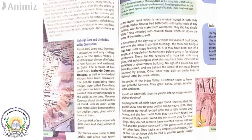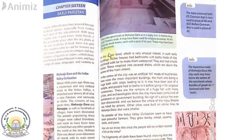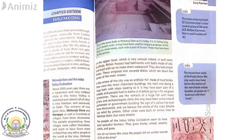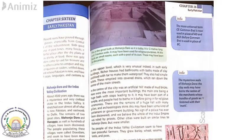We are starting with the history portion first, then switching to geography. The houses were made of mud bricks and often had rooms on the upper level, which is very unusual for such early buildings. Mohenjo-daro and Harappa were very well-civilized cities in the Indus Valley civilization — they were ahead of their times.